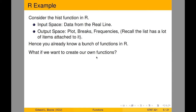Consider the hist function to make a histogram. The input space takes data from the real line — you go out, do measurements, get numbers, and throw them into the histogram function. What does it output? It produces a picture and other things like a list — breaks, frequencies, and a whole bunch of things attached to the output space.